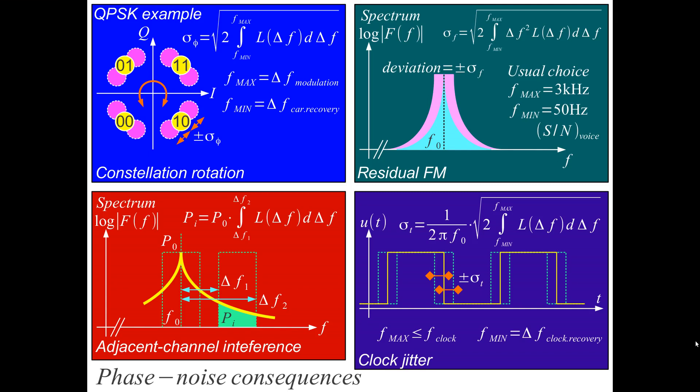At the end of the previous hour we saw that the phase noise of an oscillator is a limiting performance factor in many electronic communication systems. It appears as constellation rotation in numerical systems, as residual frequency modulation in analog systems, in the adjacent channel interference, and also in the clock jitter. So it's a problem in many different areas.